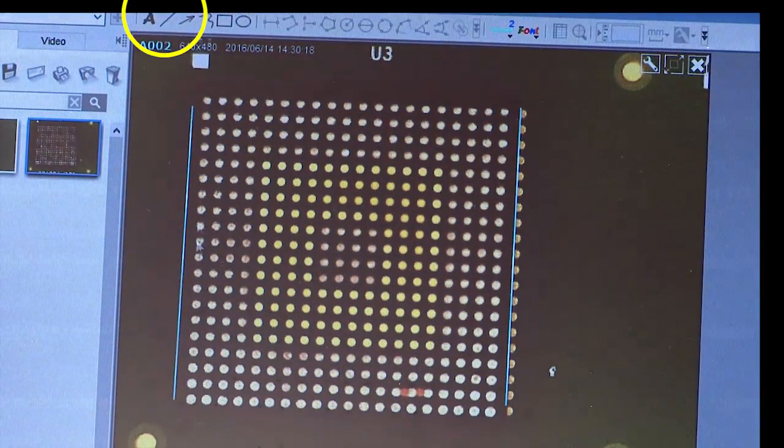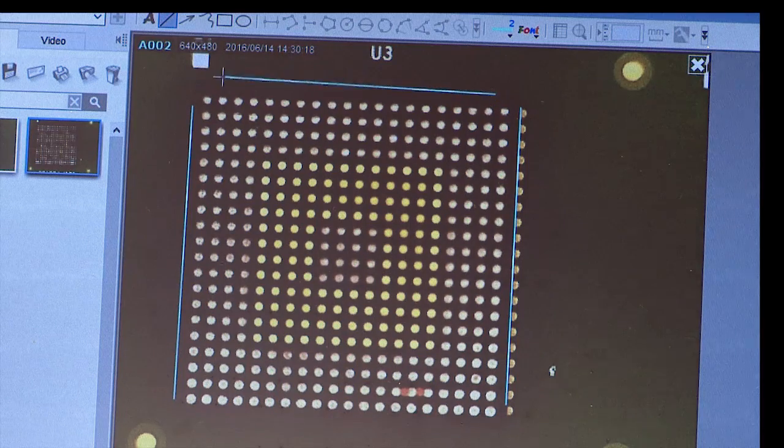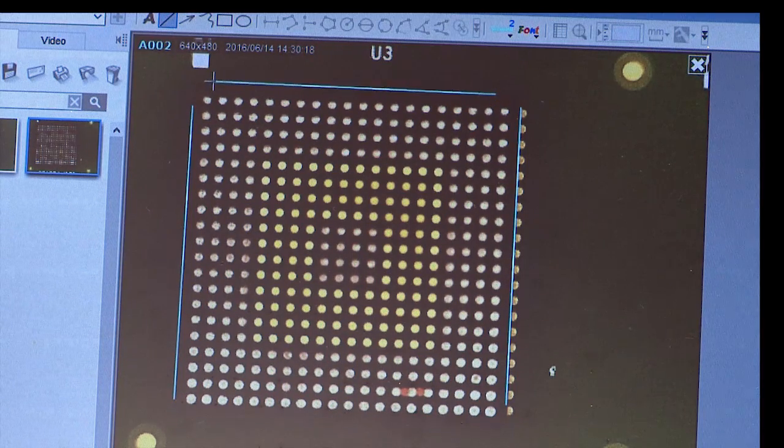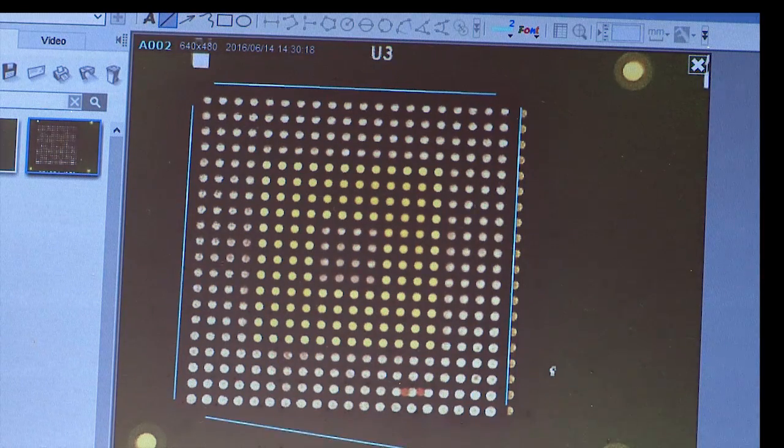With the software tools, draw lines to identify the four edges of the component. These guide marks will provide a reference that can be used to manually align the component package to the transparent image that is overlaid over the array.